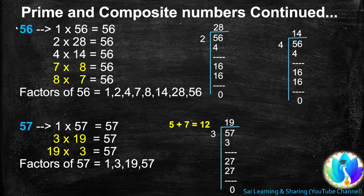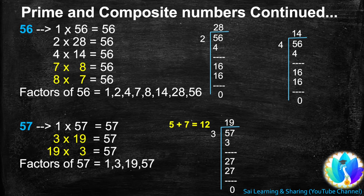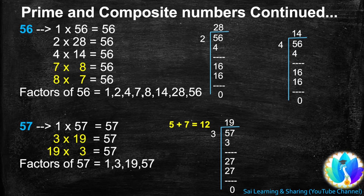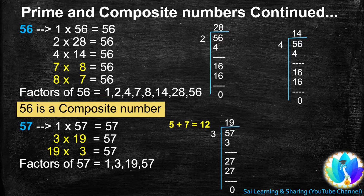56 is not a multiple of 5 or 6. 56 is a multiple of 7, giving 7 times 8 equals 56. 56 is also a multiple of 8, giving 8 times 7 equals 56. We stop here because 7 and 8 have occurred earlier. Factors of 56: 1, 2, 4, 7, 8, 14, 28, and 56. Since 56 has more than 2 factors, 56 is a composite number.